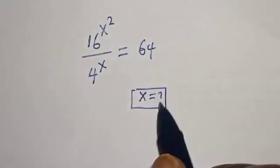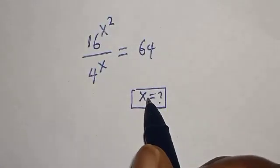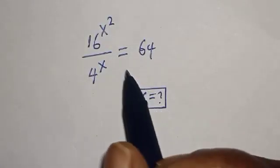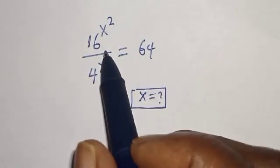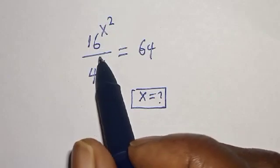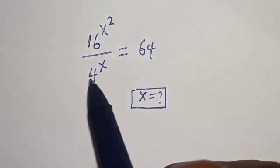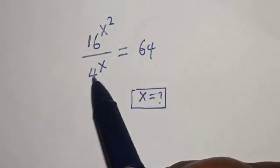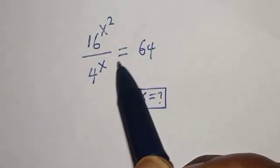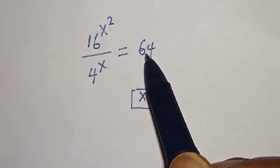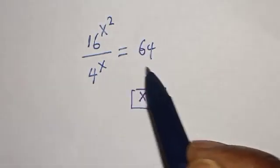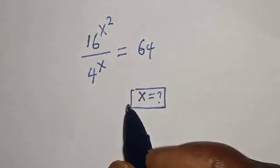Hello, welcome to Magis. In this class we want to find the value of s from this given powerful exponential equation: 16 raised to power s squared, divided by 4 raised to power s, is equal to 64.